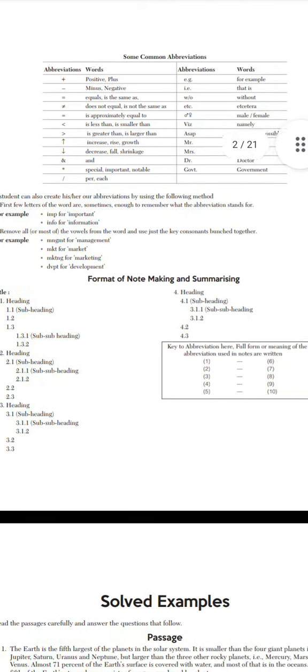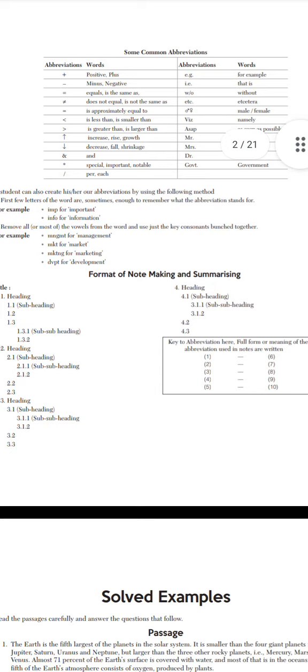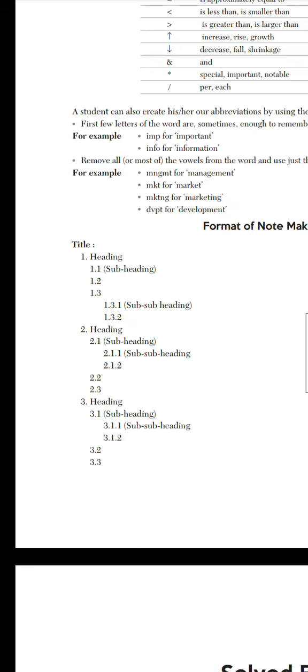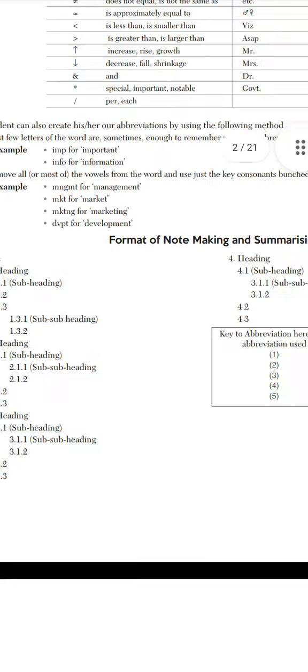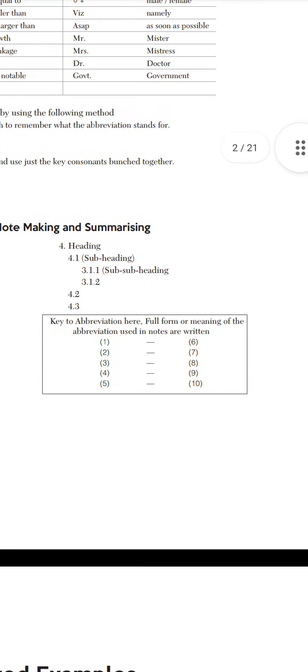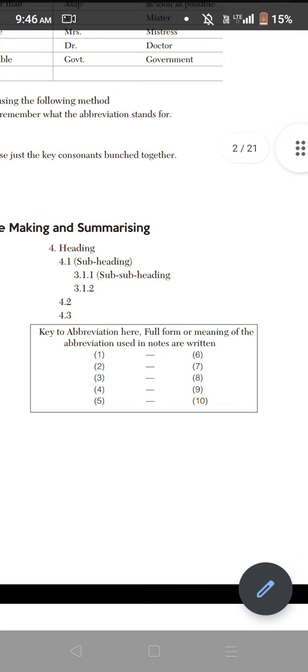The next thing is the format of note-making and summarizing. First is the title, then you have headings and subheadings of that relevant heading: first heading with its subheading, second heading with its subheading, third heading with its subheading, and fourth heading with its subheading. The key to abbreviation shows the full form or the meaning of the abbreviation used in the notes.